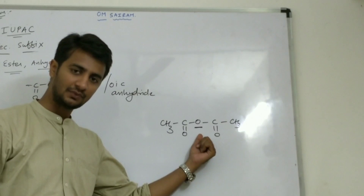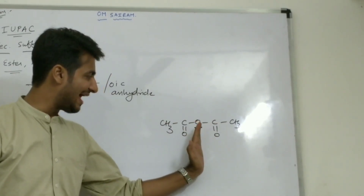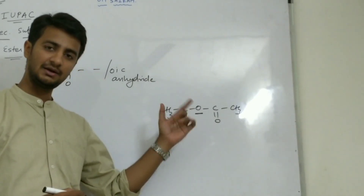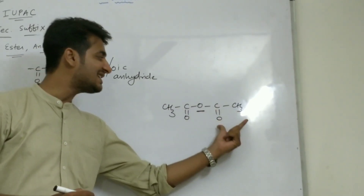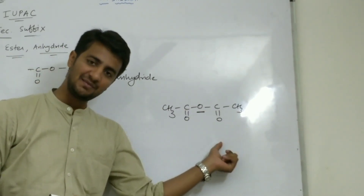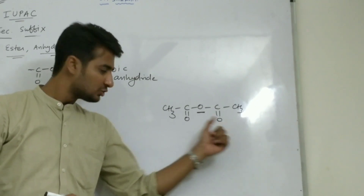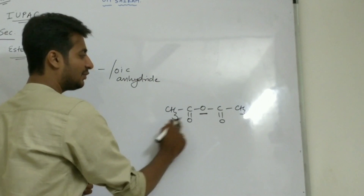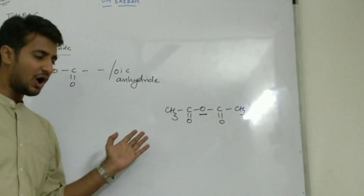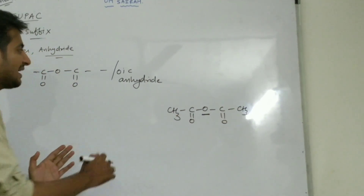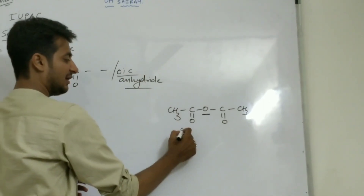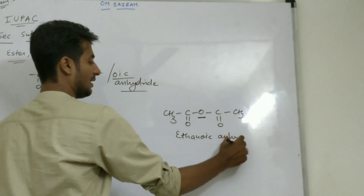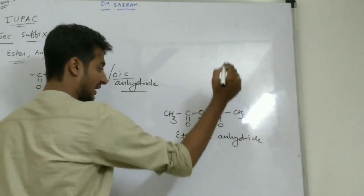Here the oxygen is in the middle. Now you have to see on the left side of this oxygen how many total carbons are there — two. On the right side of this oxygen how many carbons are there — two. Both sides have the same number of carbons. Two carbons means 'eth', all single bonds so '-an', and the name of this compound will be ethanoic anhydride.